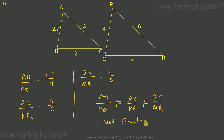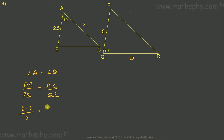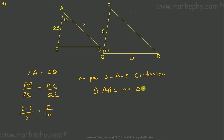For the fourth pair: angle A equals angle Q, and the sides including these angles — AB and AC in one triangle, PQ and QR in the other — are proportional. AB over PQ equals AC over QR, which is 2.5 over 5 equals 5 over 10. So as per the Side-Angle-Side (SAS) criteria, triangle ABC is similar to triangle PQR.